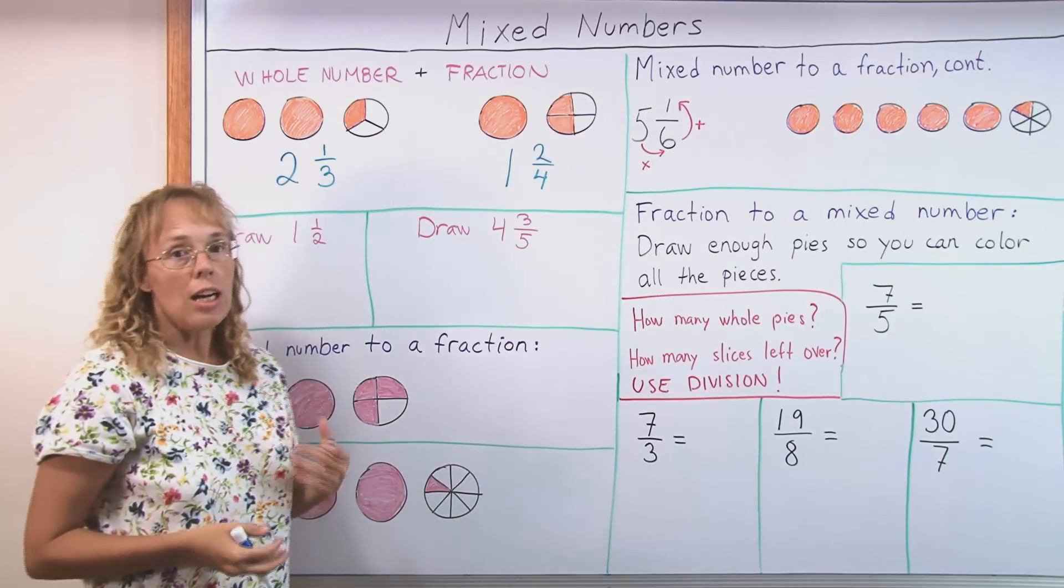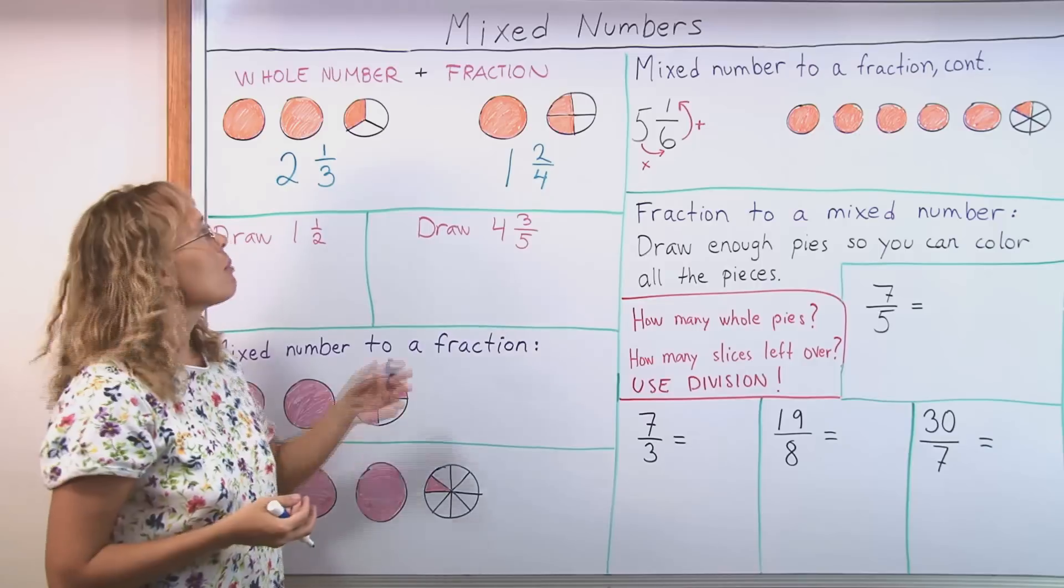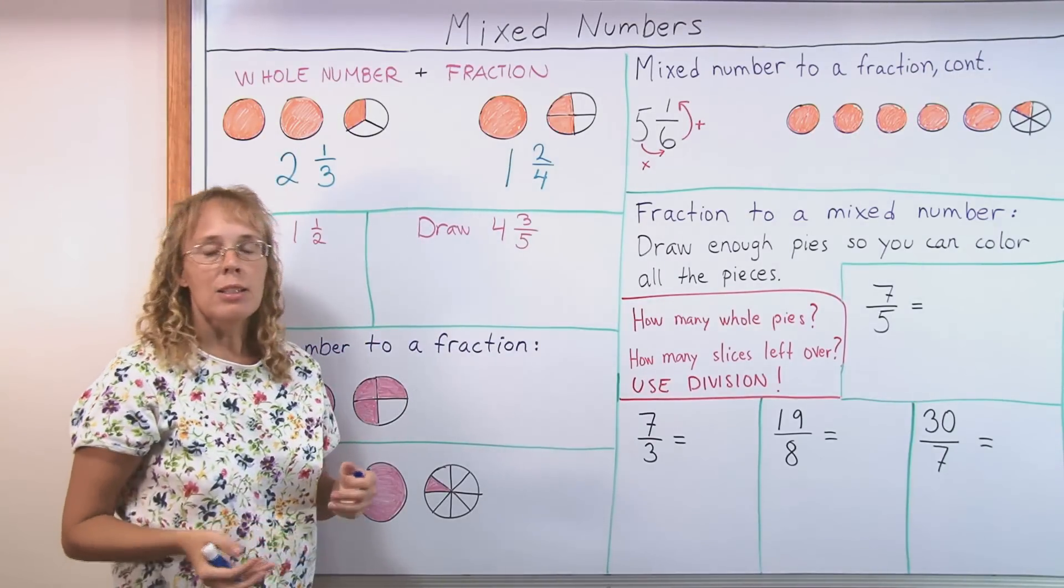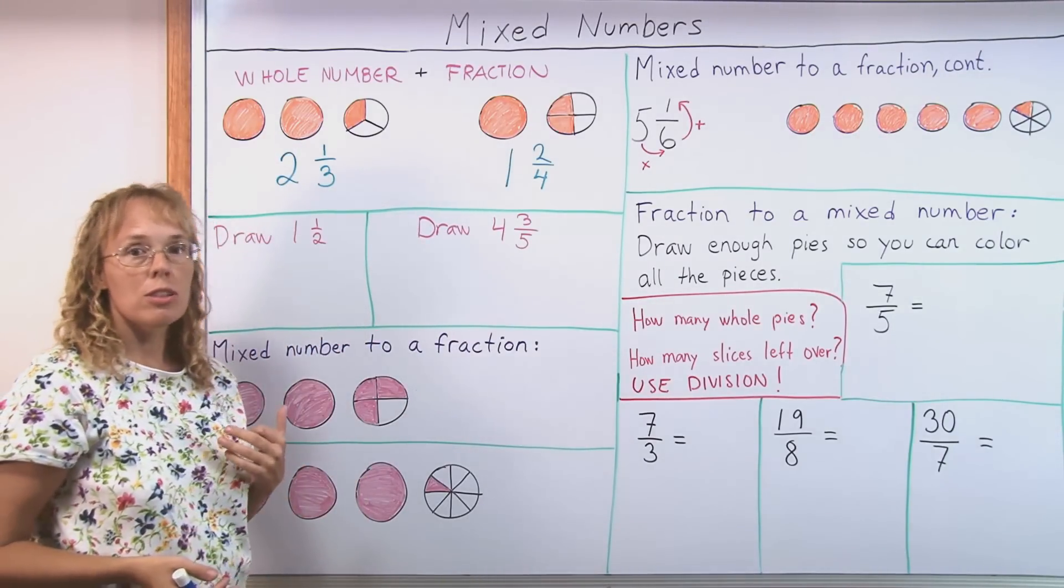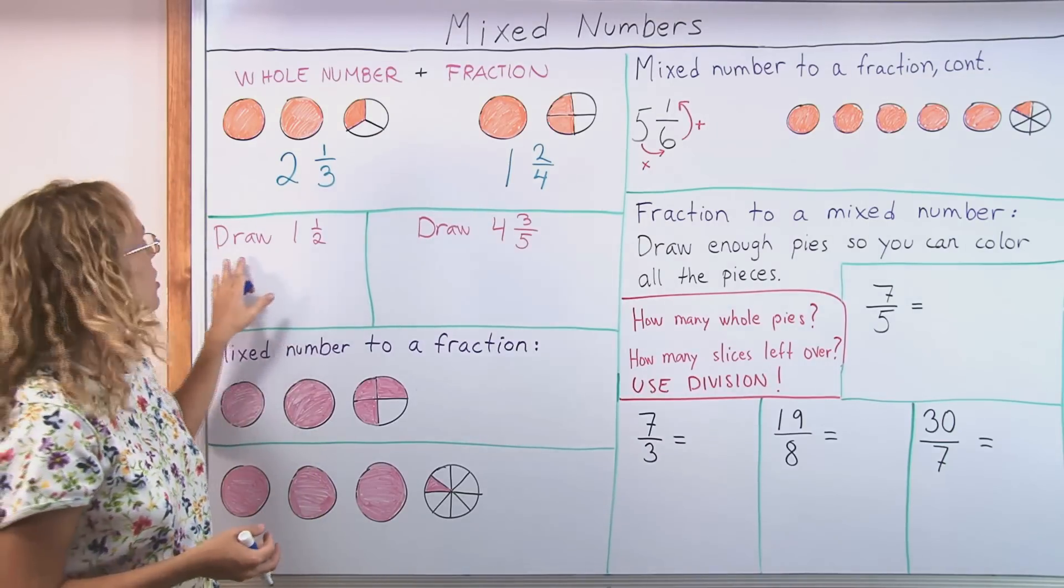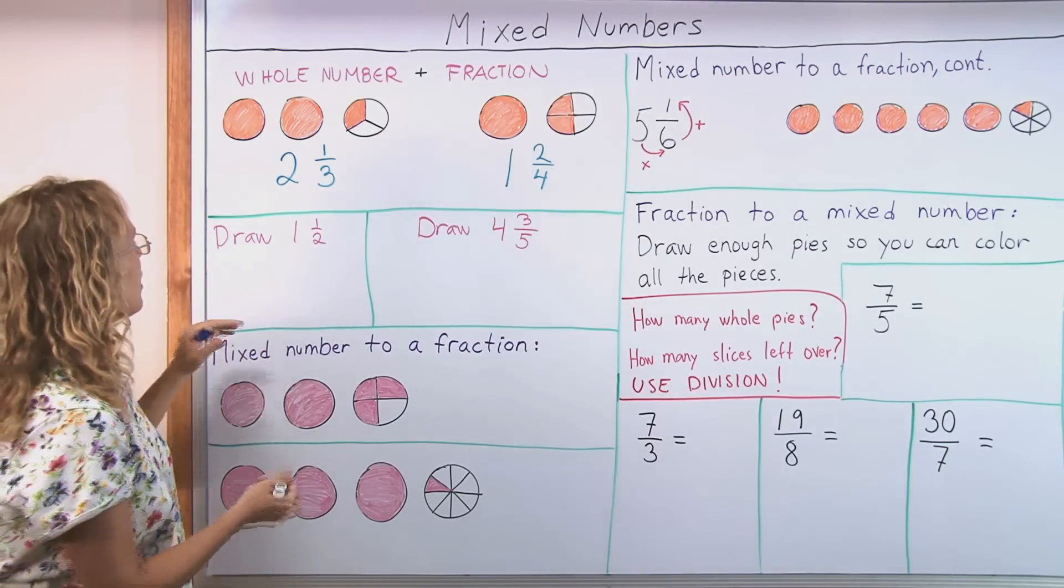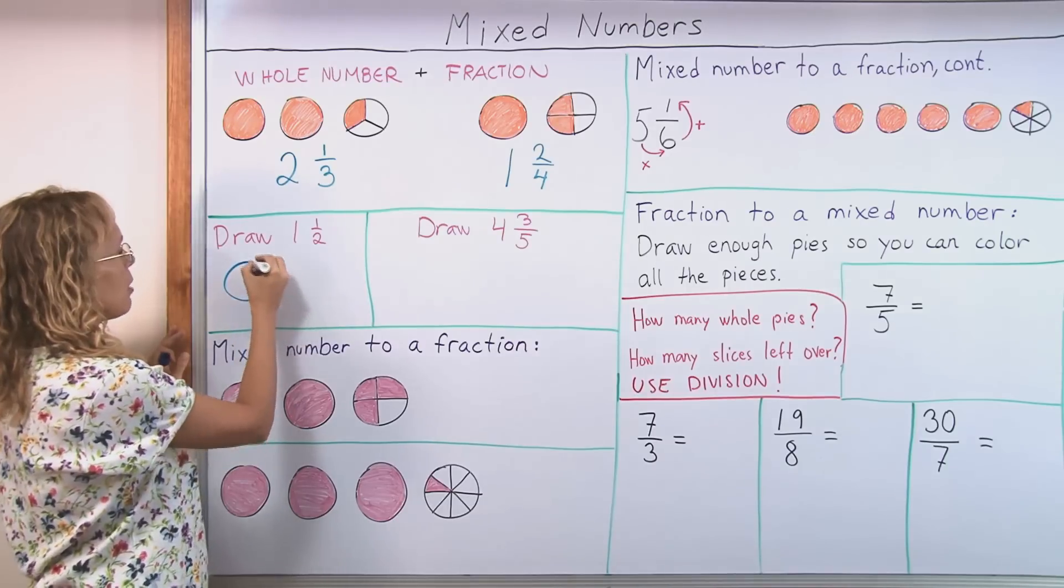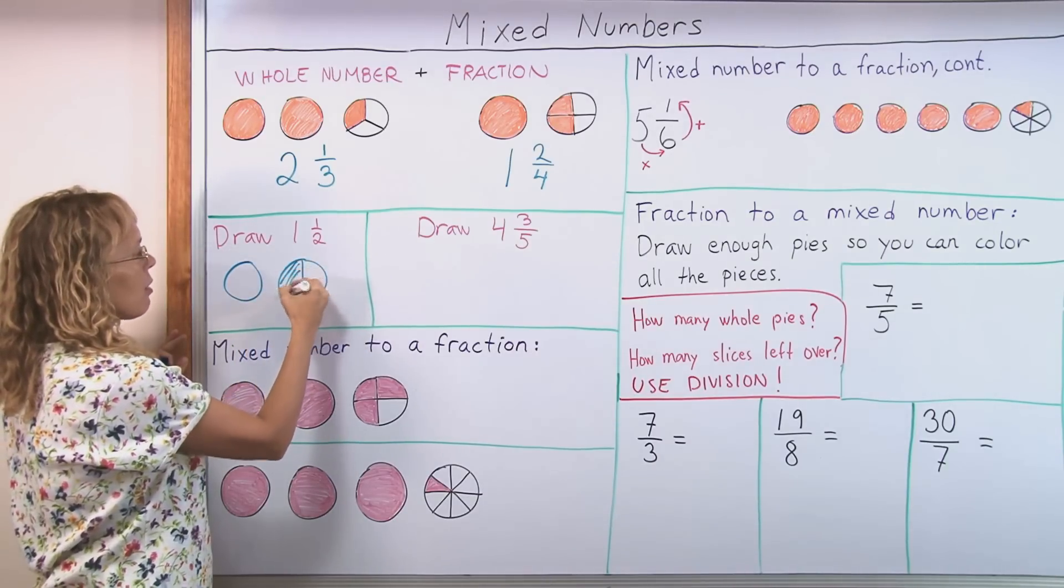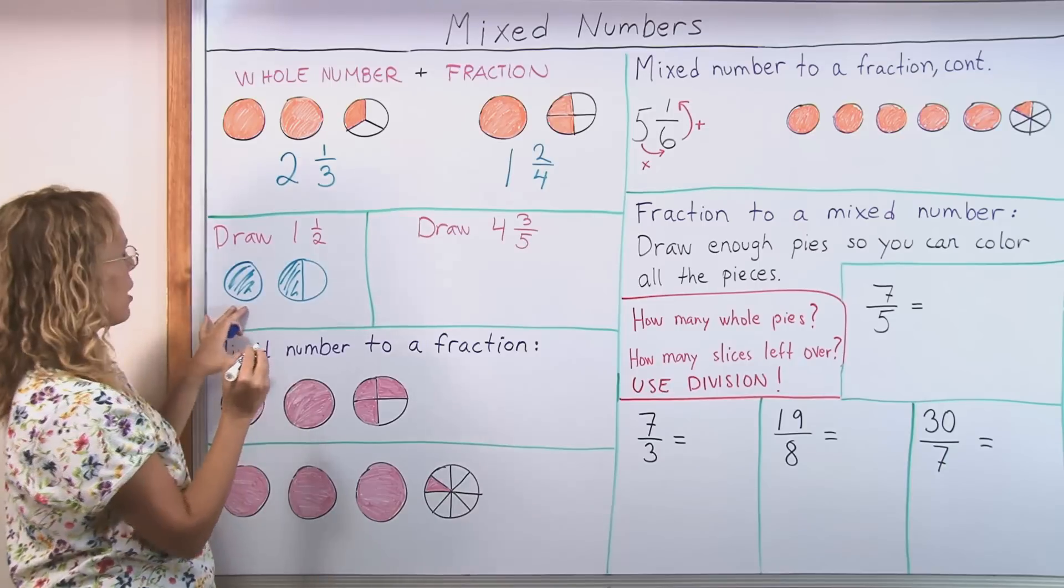So students of course need to first learn to identify mixed numbers using visual models. And a part of that is that they will also draw the visual models when the mixed number is given. Draw one and a half. So they need to draw one whole pie, then another pie where they will color the half. One pie colored and one half.